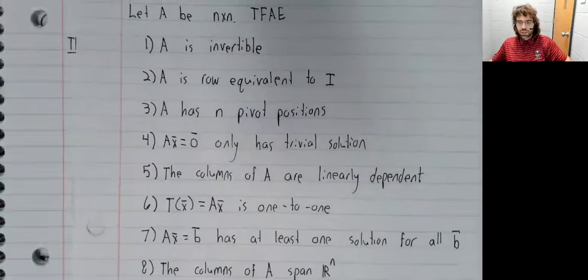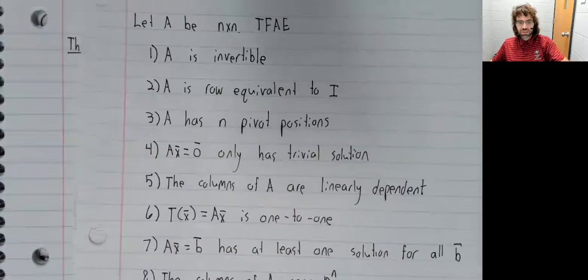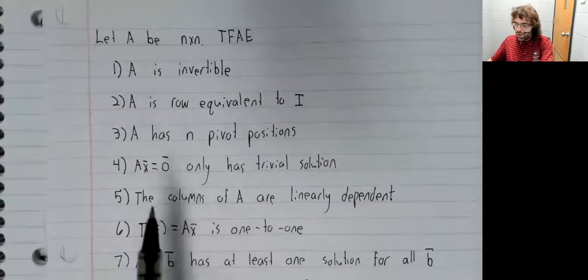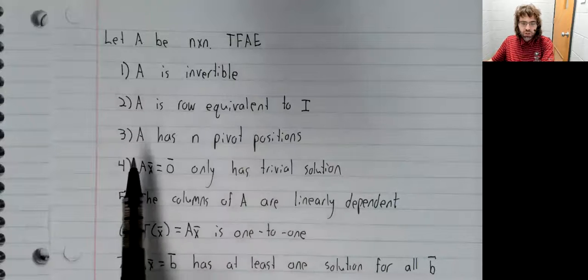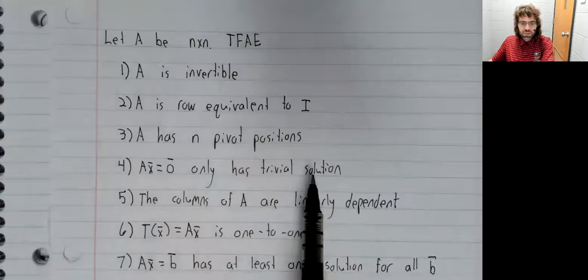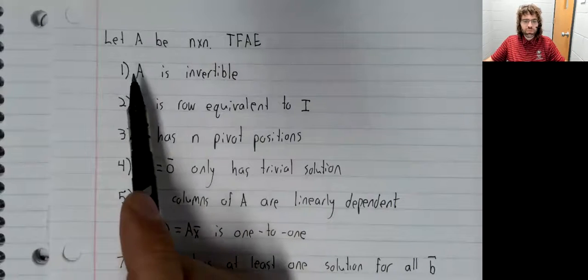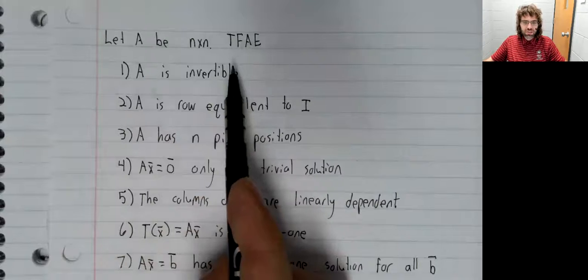then returning to this list, 4 and 1 are equivalent. So proving this is the same as proving this.